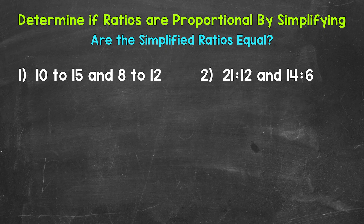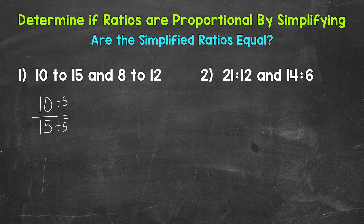We'll start with 10 to 15. The greatest common factor between 10 and 15 is 5, so let's divide both of these terms by 5. 10 divided by 5 is 2, and 15 divided by 5 is 3. The greatest common factor between 2 and 3 is 1, so we are in simplest form. 10 to 15 simplifies to 2 to 3.